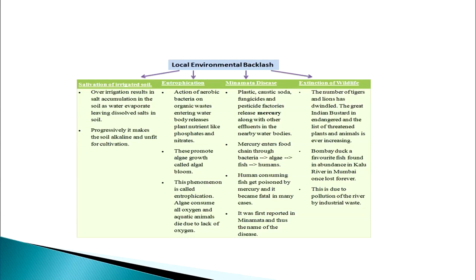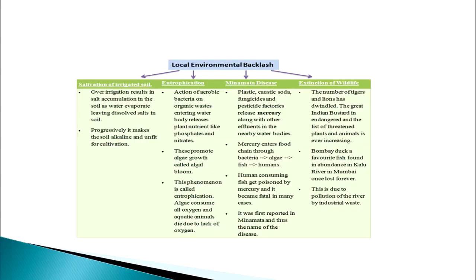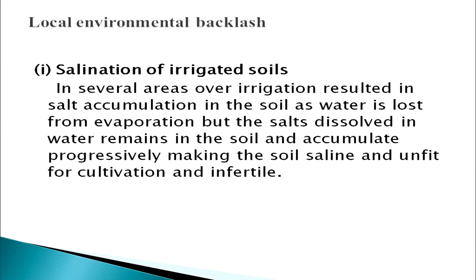Local environmental backlash: number one is salination of irrigated soil. In several areas, over-irrigation has resulted in salt accumulation in the soil as water is lost through evaporation. The salts dissolved in water remain in the soil and accumulate progressively, making the soil saline, infertile, and unfit for cultivation.